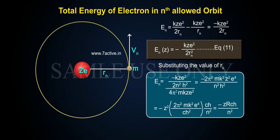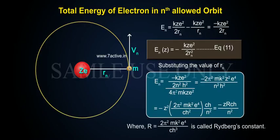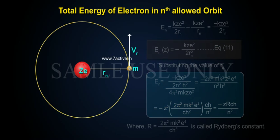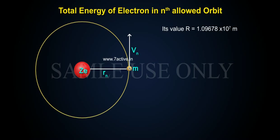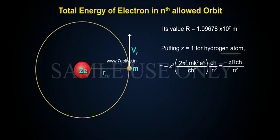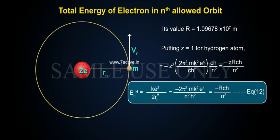This equals minus Z²Rch/n², where R equals 2π²mk²e⁴/ch³ is called Rydberg's constant. Its value is R equals 1.09678 × 10⁷ per meter.